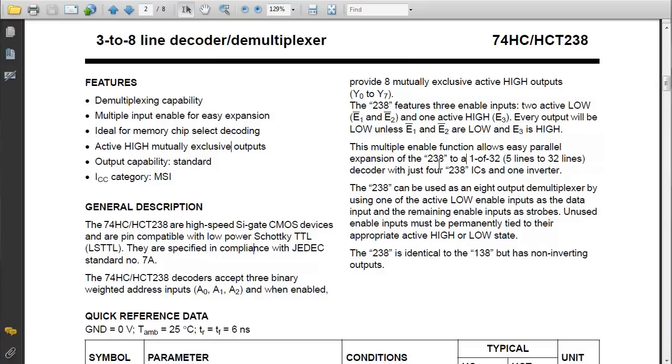This is a little bit unusual. You may not expect it, but the reason for it is that it allows us to combine this decoder with three other decoders and a single inverter to create a five line to 32 line decoder, which is quite powerful functionality.